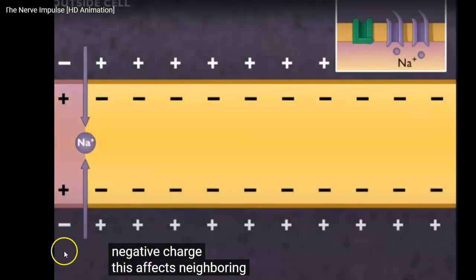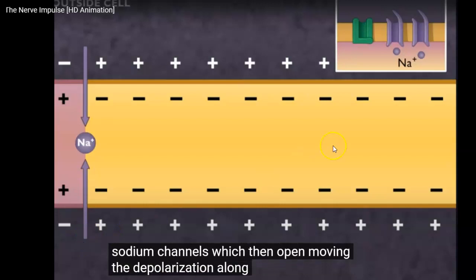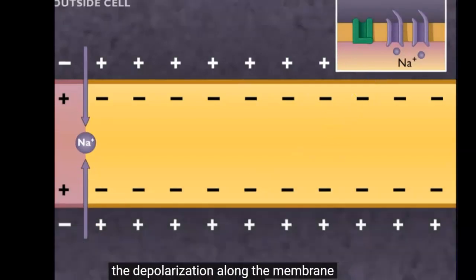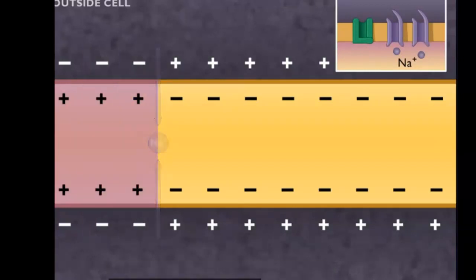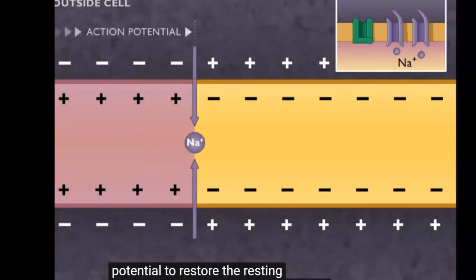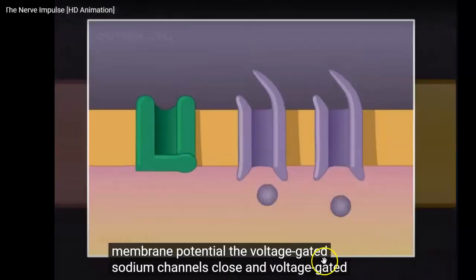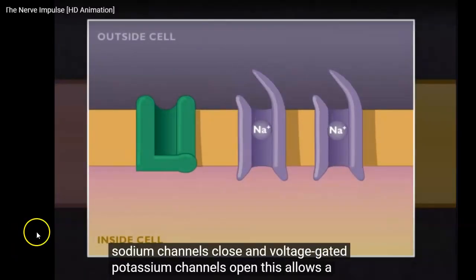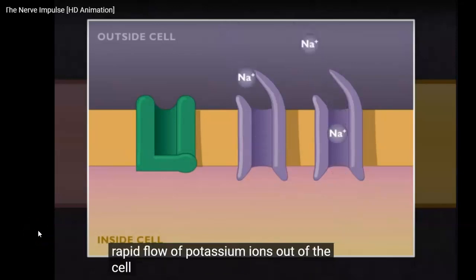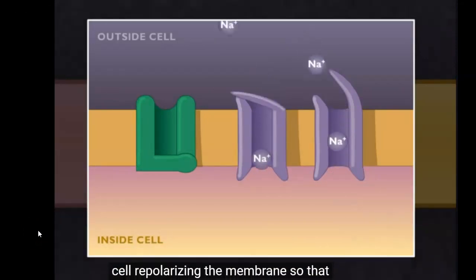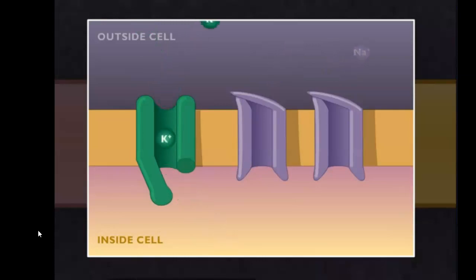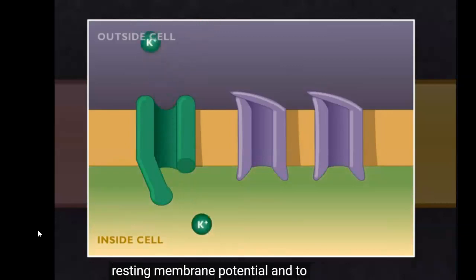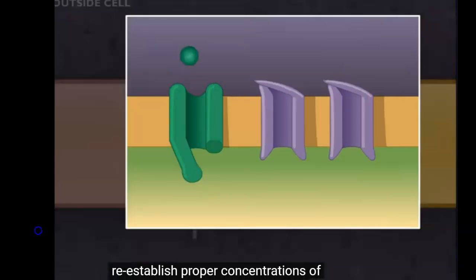This affects neighboring voltage-gated sodium channels which then open, moving the depolarization along the membrane. This moving depolarization is called an action potential. Changes occur behind the action potential to restore the resting membrane potential. The voltage-gated sodium channels close and voltage-gated potassium channels open. This allows a rapid flow of potassium ions out of the cell, repolarizing the membrane so that the inside is again negative and the outside positive. This is followed by use of sodium-potassium pumps to fully restore the resting membrane potential.